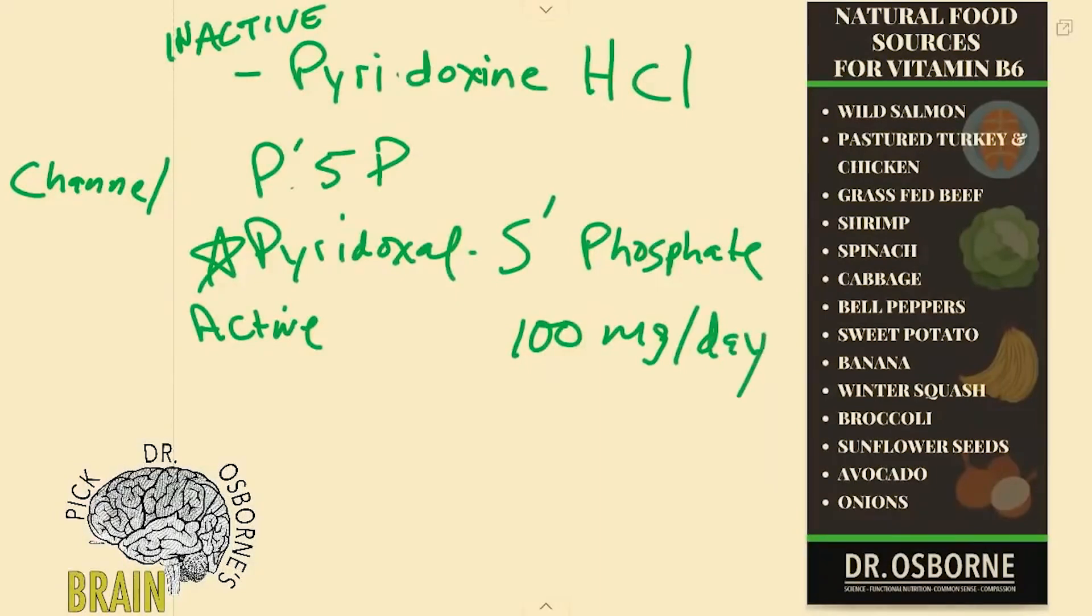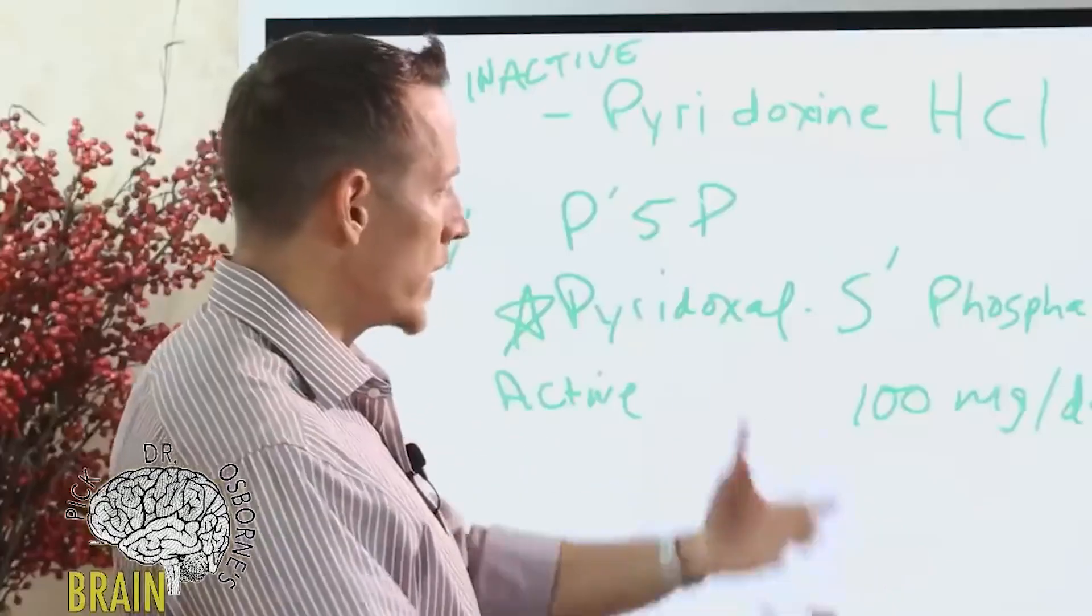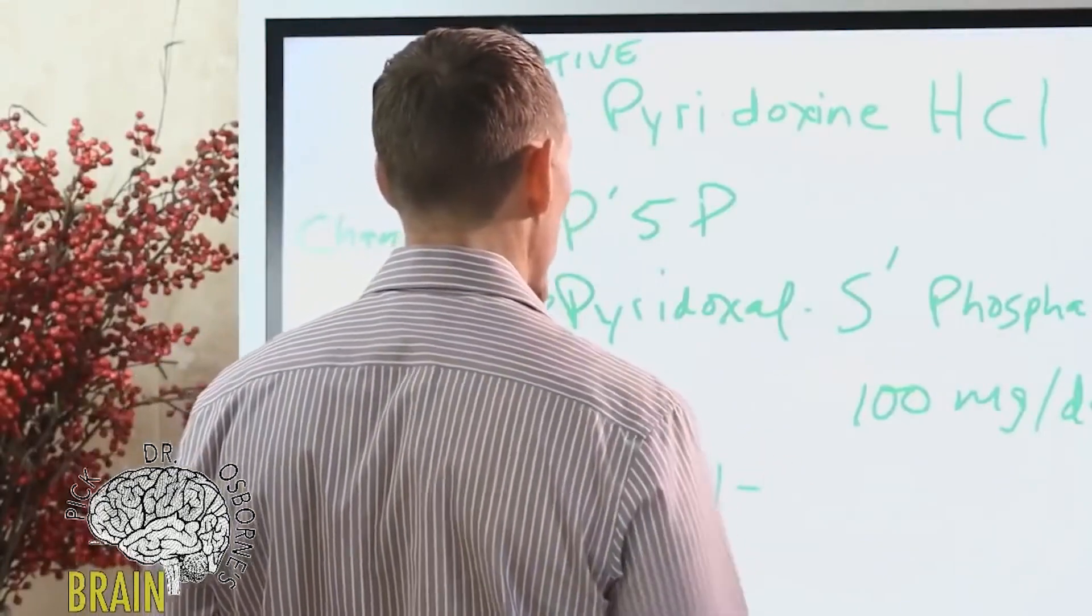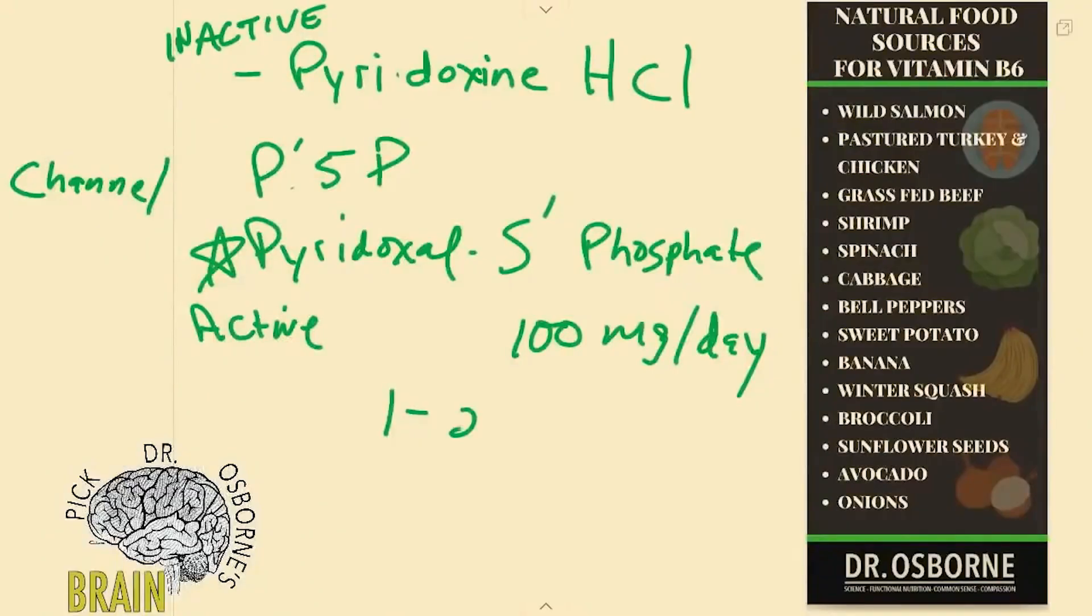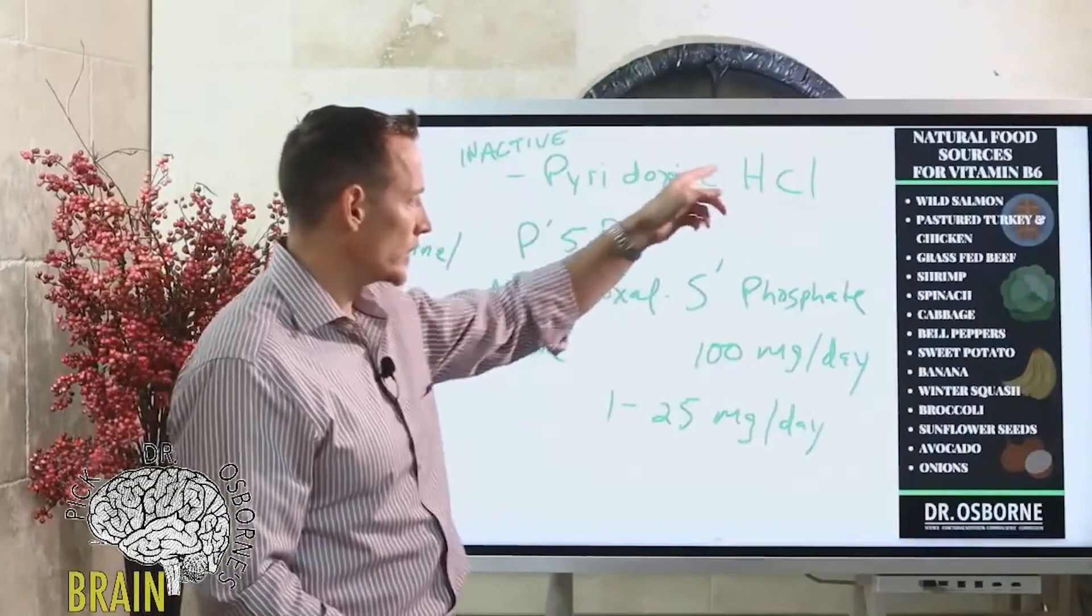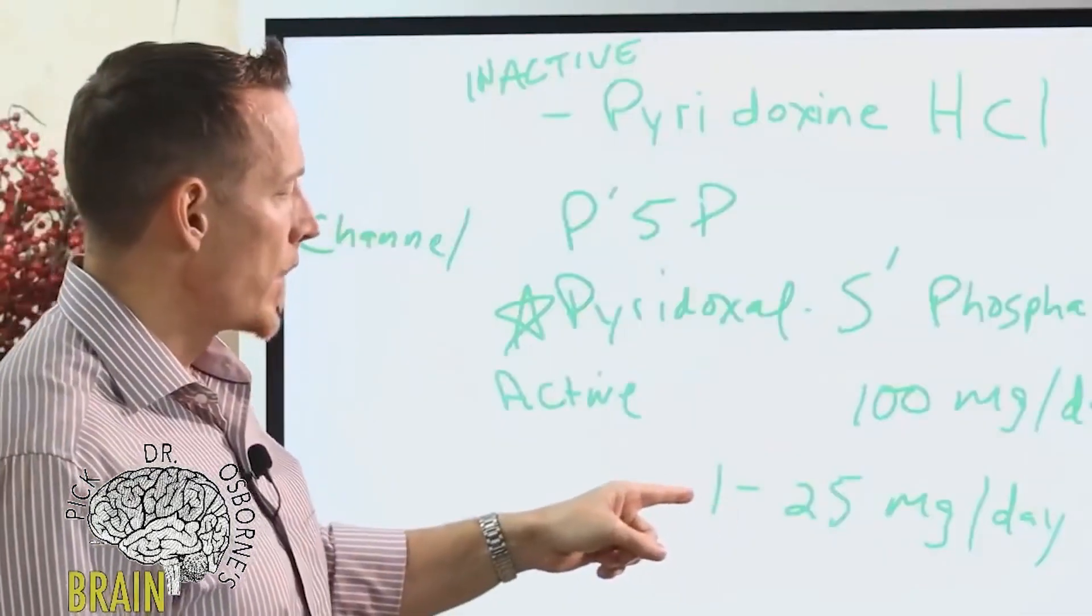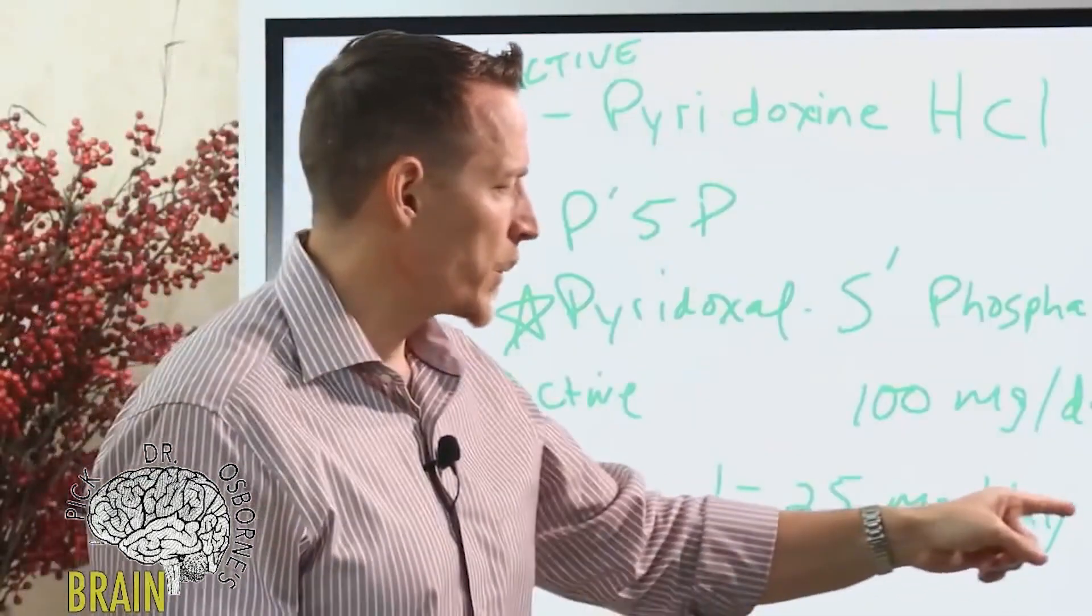If you're not being monitored don't push it, don't go over this. If you're being monitored let your doctor monitor you and give you their expertise. But most supplemental preparations will contain between 1 and 25 milligrams per day of pyridoxal 5' phosphate or pyridoxine hydrochloride. Now this doesn't work as well so you really want to look for this version.